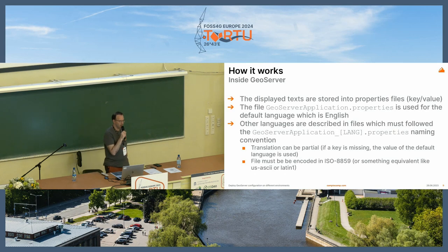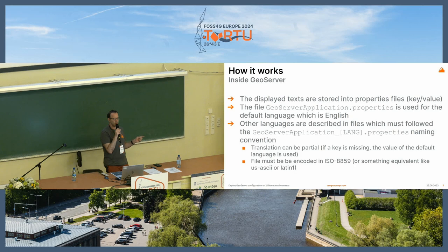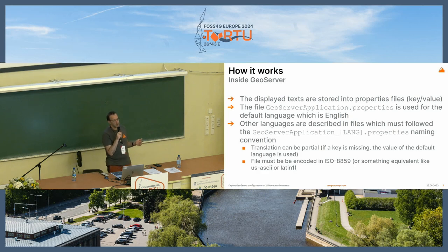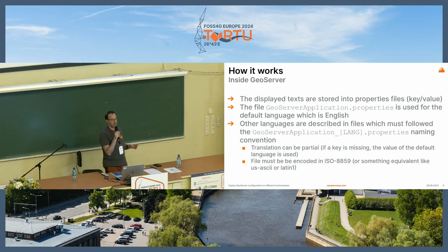For the administration UI, the text comes from properties files with a key-value system. There is always a GeoServer application.properties file which contains the default language in English. Other languages are described in files with a suffix indicating the language in ISO code. You can provide a partial translation — in that case the default English will be used as fallback — and you have to take care of the file encoding, which should be ISO-8859 or something equivalent like US-ASCII or Latin-1.